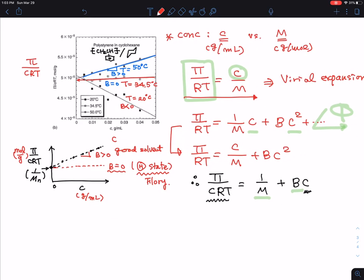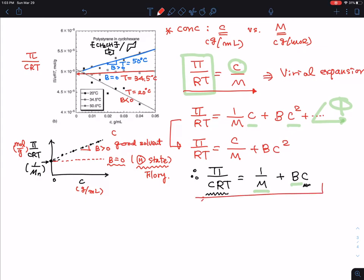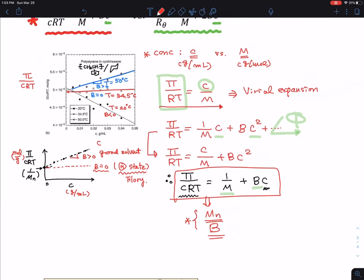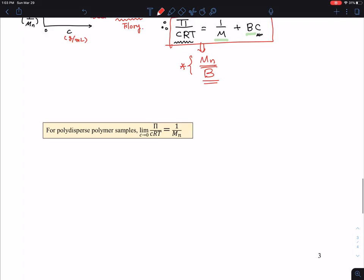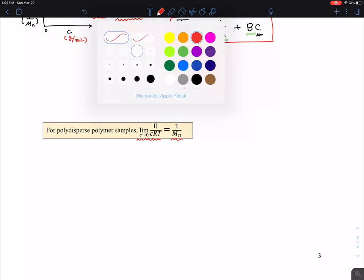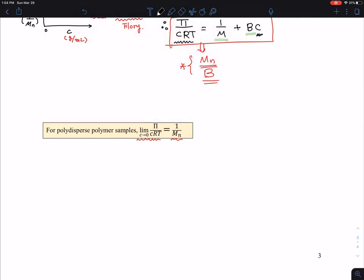Here I've given you an example of the utilities of these. From the osmotic pressure experiment, we can get two important quantities: number average molecular weight and second virial constant B as a measure of solvent quality. I want to show you how this extrapolation of this quantity when concentration goes to 0 gives you the number average molecular weight.